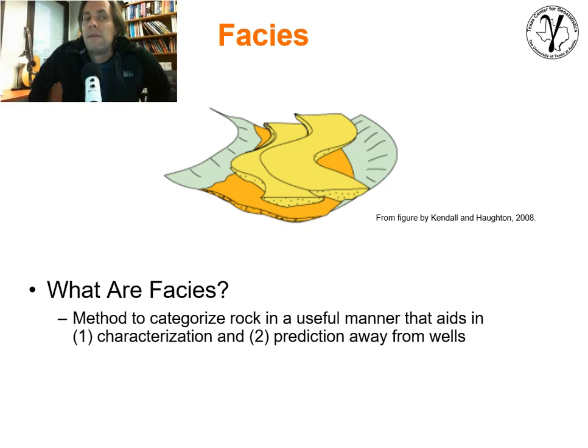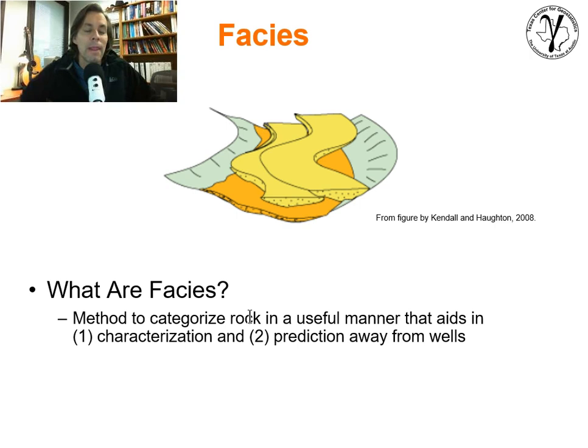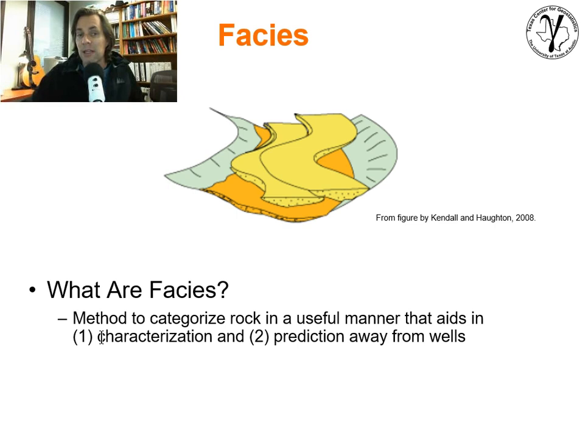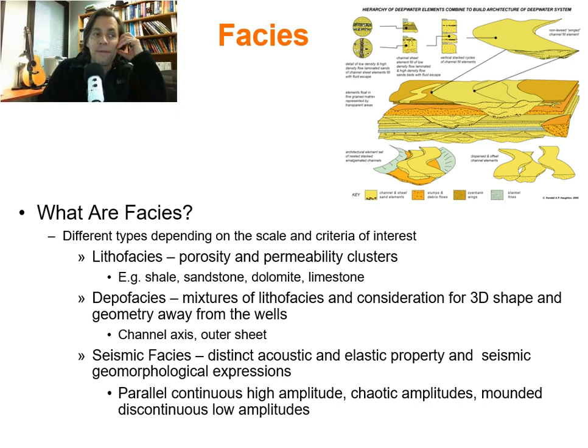So what are facies? The most simple definition would be a method to categorize rock in a manner that's useful. What is useful for us in the subsurface? It's a form of characterization — it tells us about the rock and allows us to understand it better. But it also should aid us in making predictions away from the well locations or data locations. If the facies don't help us with prediction, they're not very useful to us from the perspective of building models.